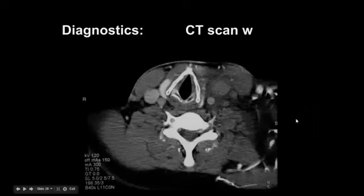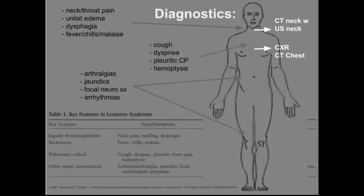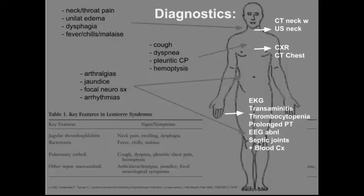On CT scan, as we saw before — in this case on the left side — you can see that the IJ is clotted off. For the pulmonary emboli, chest X-ray or CT chest can show it. Then think about where else your septic microemboli are going: EKGs, transaminitis or thrombocytopenia, a prolonged PT if it goes to the liver, septic joints, and of course positive blood cultures.